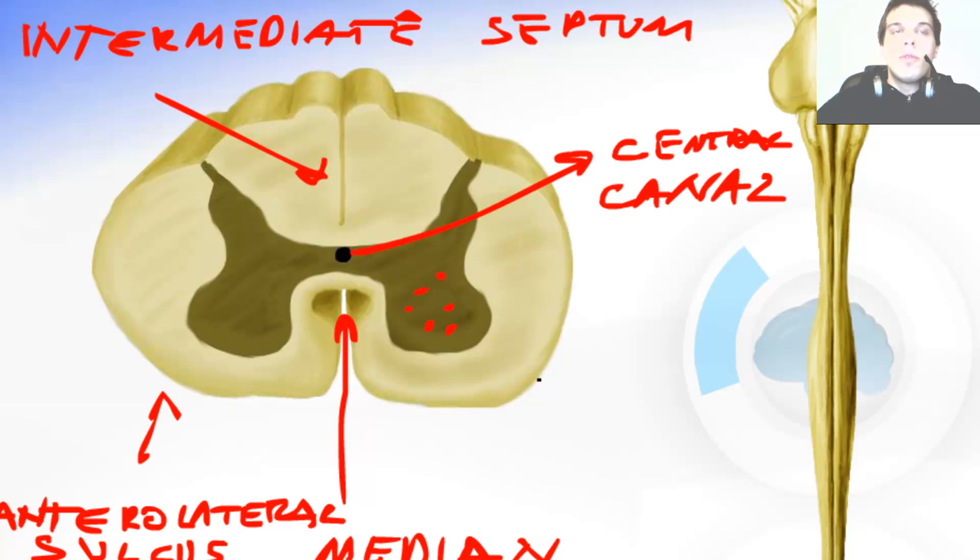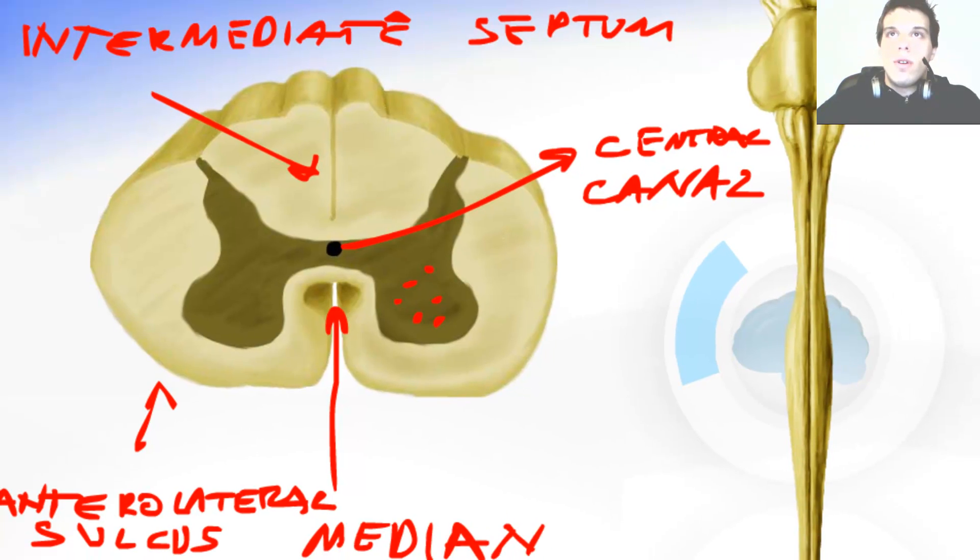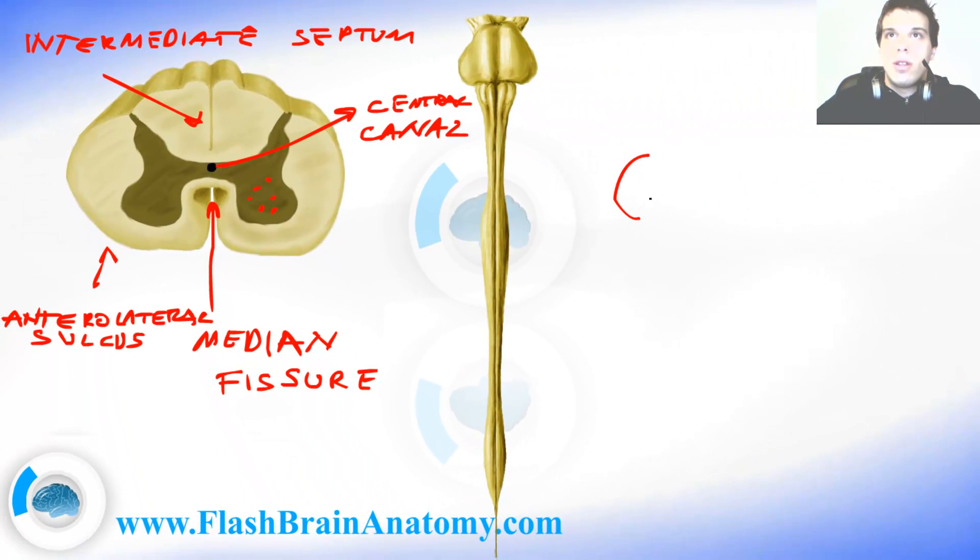Now try to remember in the embryology videos, I have drawn the neural tube. We had the neural tube with a central channel over here and cells around it. The central channel stayed really small and all these cells around it have grown. So that's why we have a central channel here really small and the rest of the spinal cord really big.